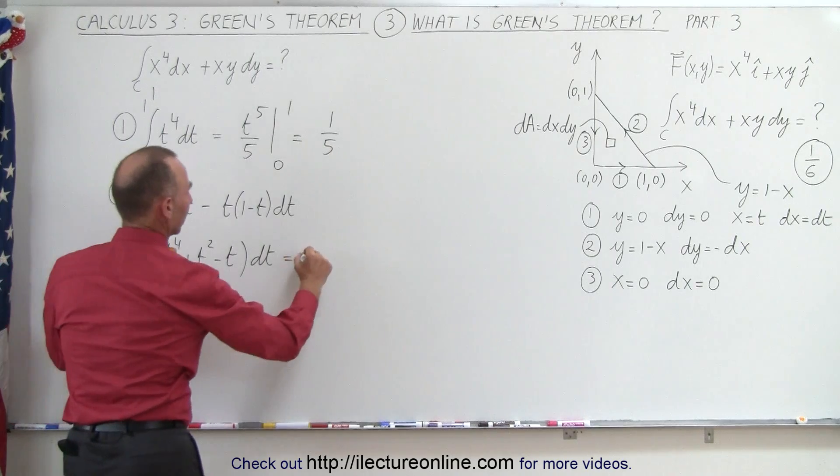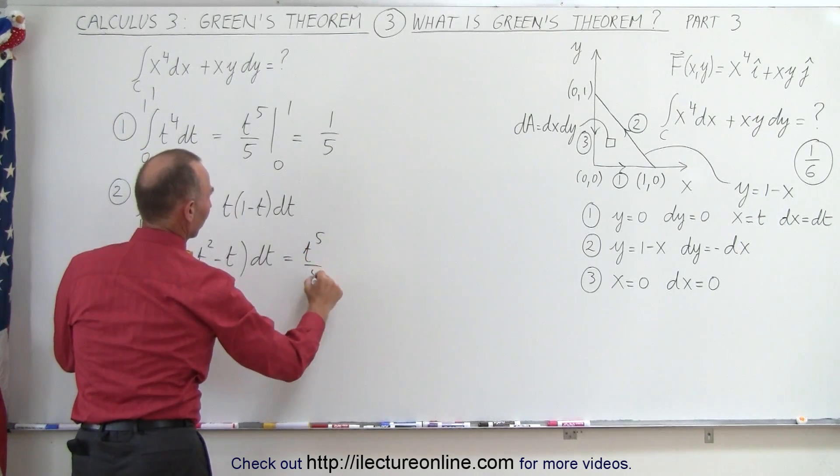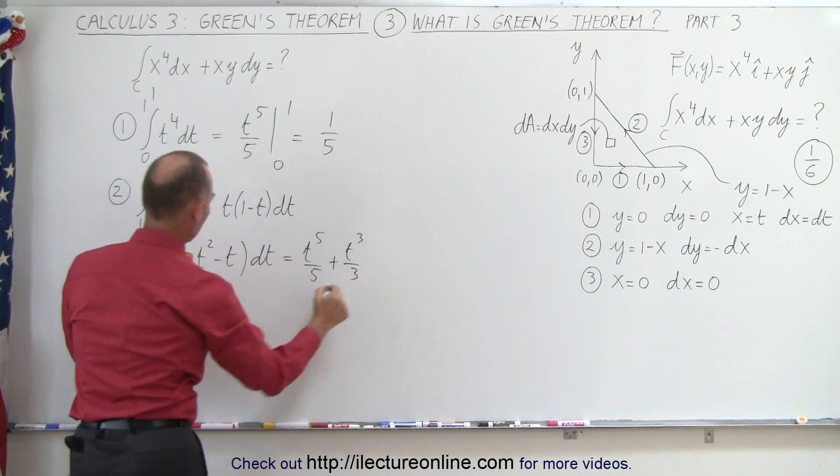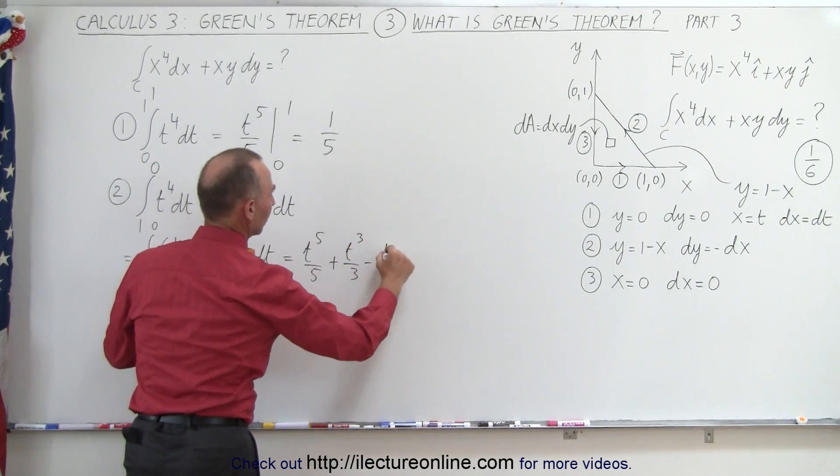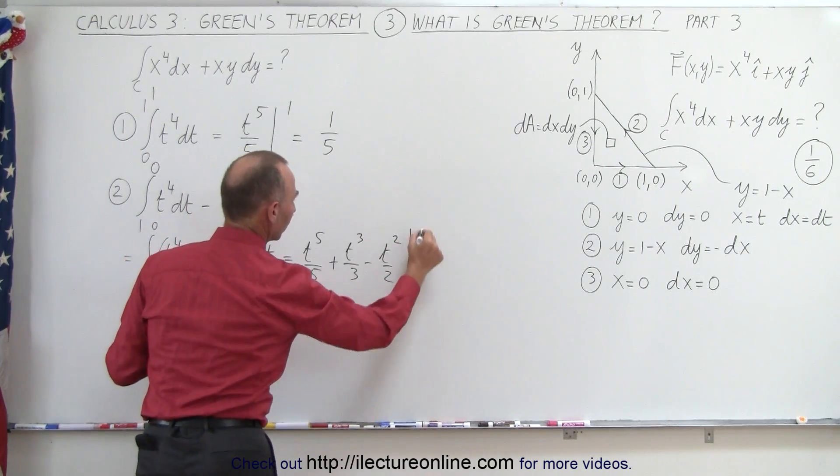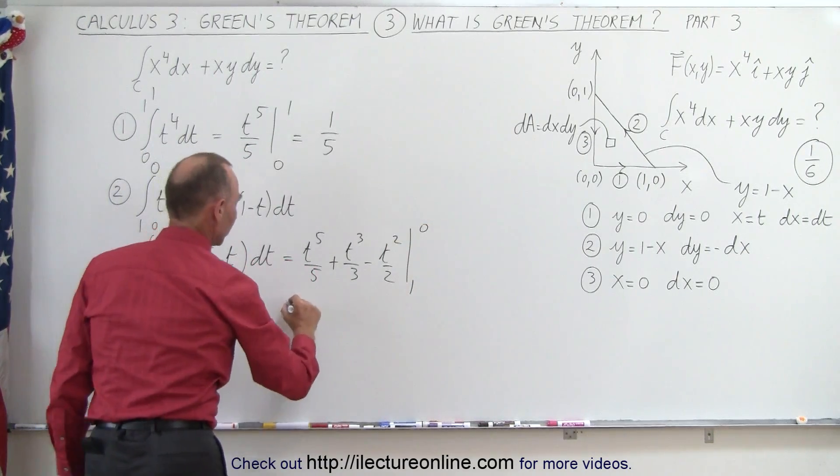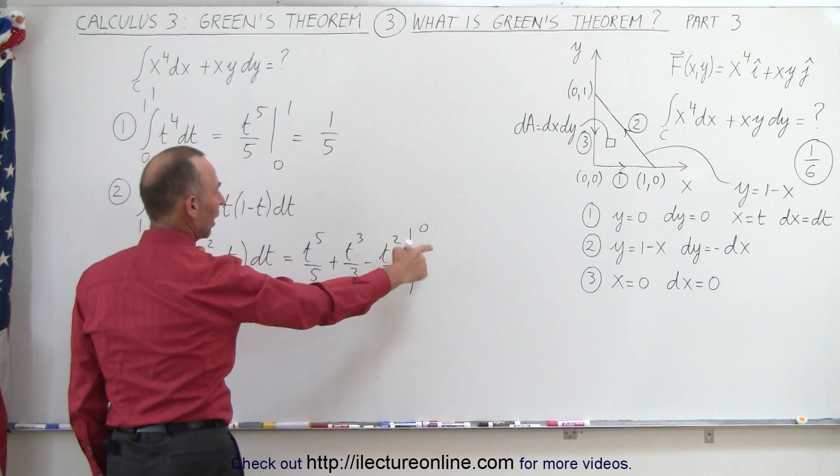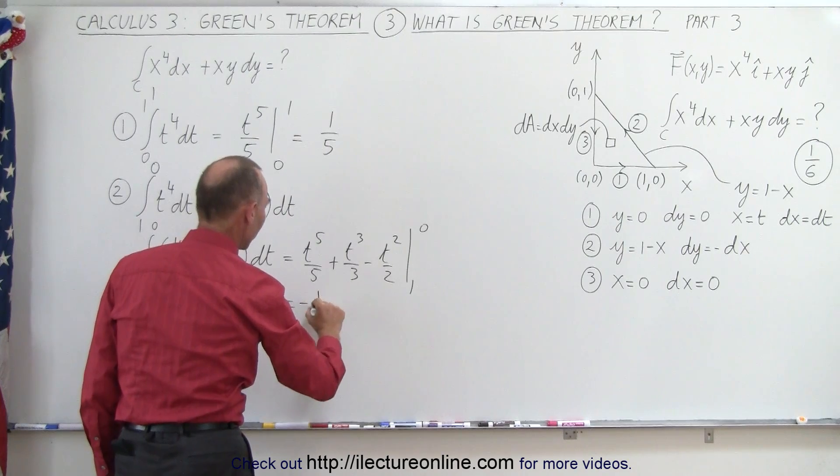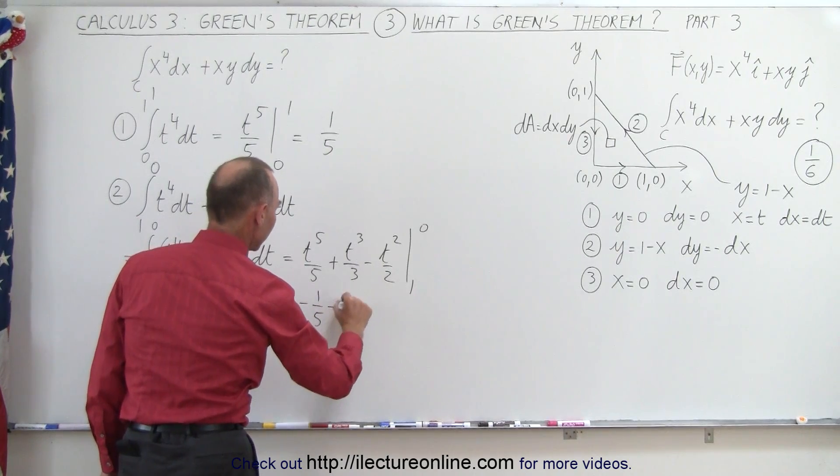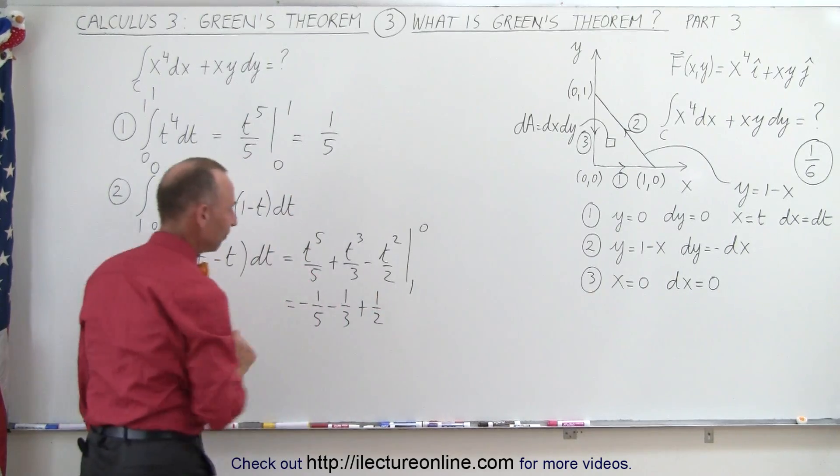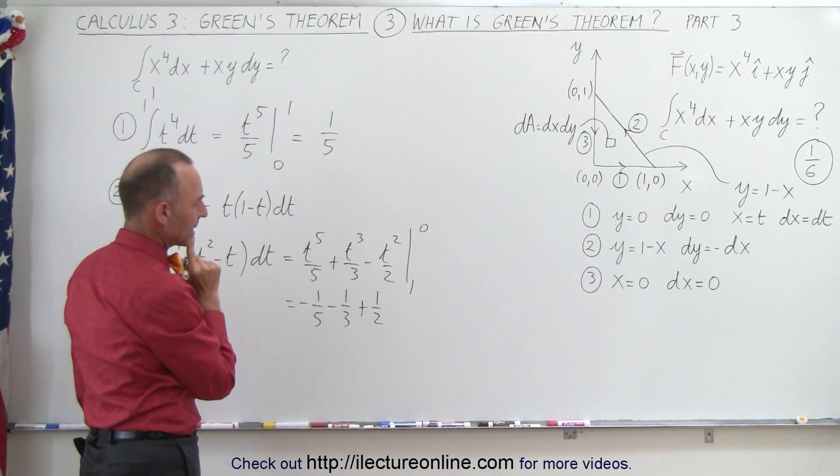So let's go ahead and do that, this is equal to t to the fifth over 5, plus t cubed over 3, and minus t squared over 2, and the whole thing evaluated from 1 to 0, which is equal to, when plugging the upper limit, we get nothing, when plugging the lower limit, we get minus 1 fifth, minus 1 third, and plus 1 half.